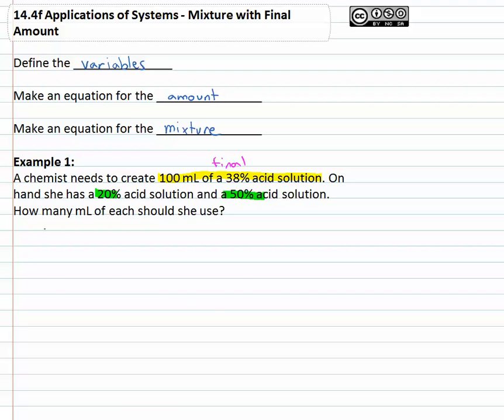So again, we've got some type of amount, we're going to add in A and B and together we'll get some total.